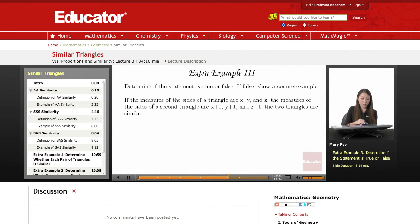And here is the statement. If the measures of the sides of a triangle are x, y, and z, and the measures of the sides of a second triangle are x plus 1, y plus 1, and z plus 1, the two triangles are similar.